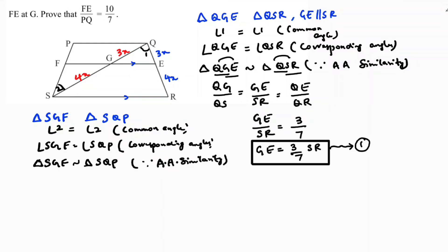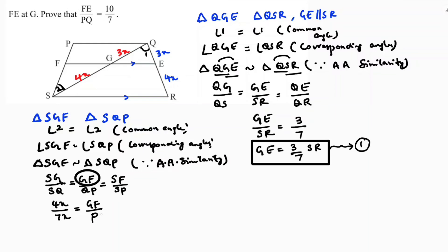Writing sides proportional: SG by SQ equals GF by QP equals SF by SP. I need FG, so I'll use SG by SQ. SG is 4x and SQ is 7x. So GF by PQ equals 4x by 7x, and x cancels. Therefore FG equals 4 by 7 times PQ. This is equation 2.